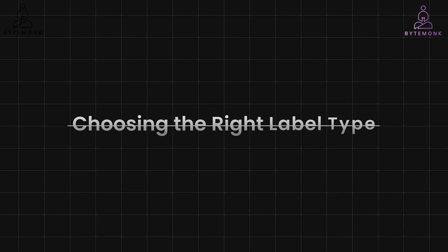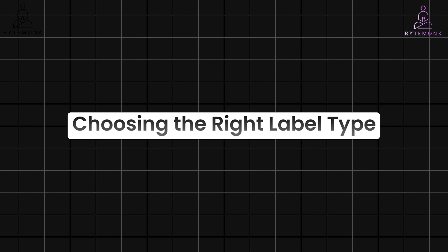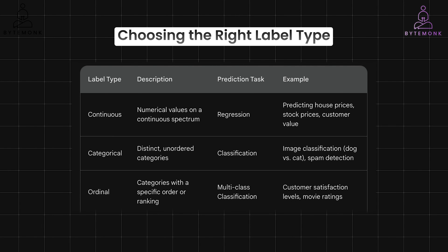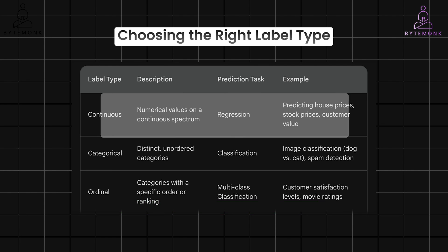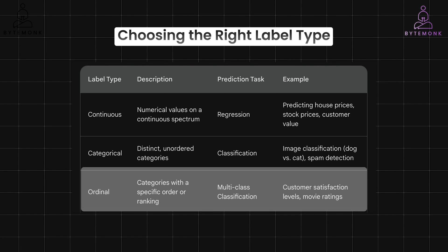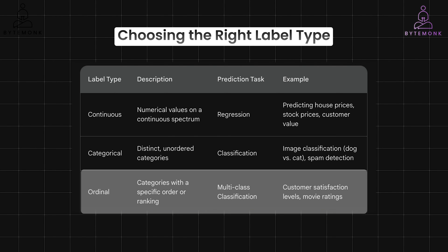The type of label you have depends on the nature of your prediction problem. If you want to predict a numerical value within a range, use a continuous label and train a regression model. If you want to predict a specific category a data point belongs to, use a categorical label and train a classification model. And if you have ordered categories, consider using an ordinal label for multi-class classification. By understanding these different label types, you can effectively choose the right approach for your supervised learning problem.